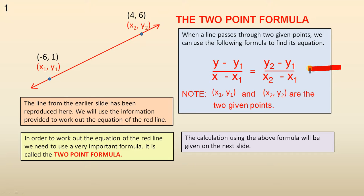And the very important formula is y minus y1 over x minus x1 equals y2 minus y1 over x2 minus x1. Note that x1y1 and x2y2 are the two given points. Here they are here.